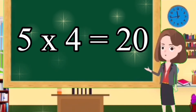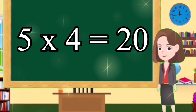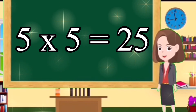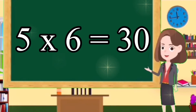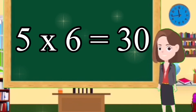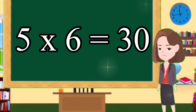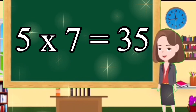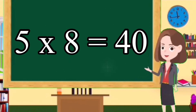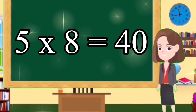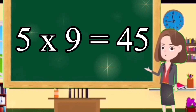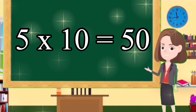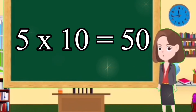Five fours are twenty. Five fives are twenty-five. Five sixes are thirty. Five sevens are thirty-five. Five eights are forty. Five nines are forty-five. Five tens are fifty.